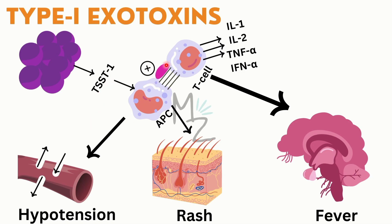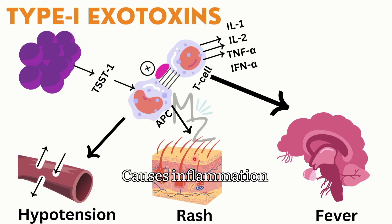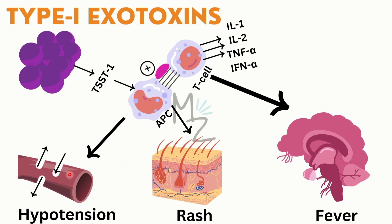When TSST1 acts as a superantigen between the antigen-presenting cell and the T cell, the T cell releases massive amounts of cytokines: interleukin-1, interleukin-2, tumor necrosis factor alpha, and interferon alpha. These cytokines act on the hypothalamus — the part of the brain regulating body temperature — leading to fever. They also act on the skin, causing redness and rash. Additionally, they act on blood vessels, causing vasodilation and increased capillary permeability, which leads to hypotension.